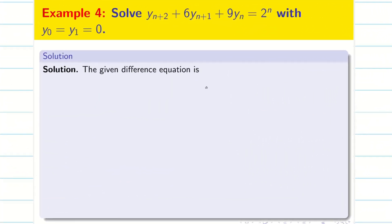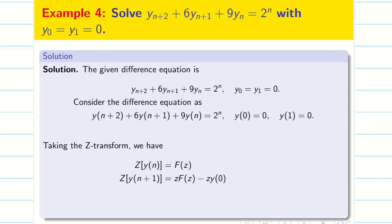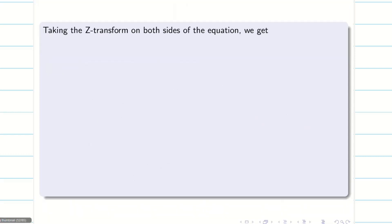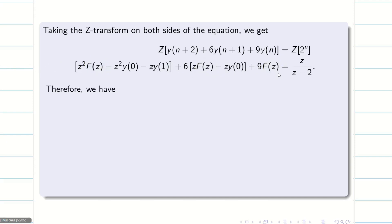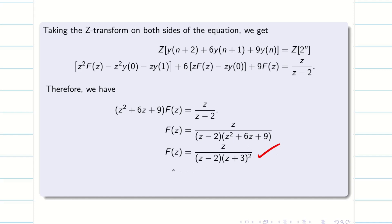In the similar way, we are going to solve the second problem also. As usual, convert into our required format. Write the formula for Z of y(n), Z of y(n+1), Z of y(n+2). Here both the initial conditions are 0, giving F(z), F(z), F(z). So I will be getting Z squared plus 6Z plus 9 into F(z). This can be simplified as (Z plus 3) whole square. Therefore, my capital F(z) is Z divided by (Z minus 2)(Z plus 3) whole square.